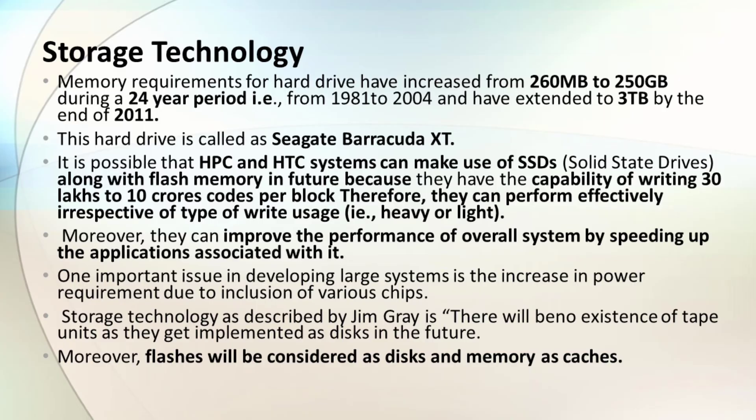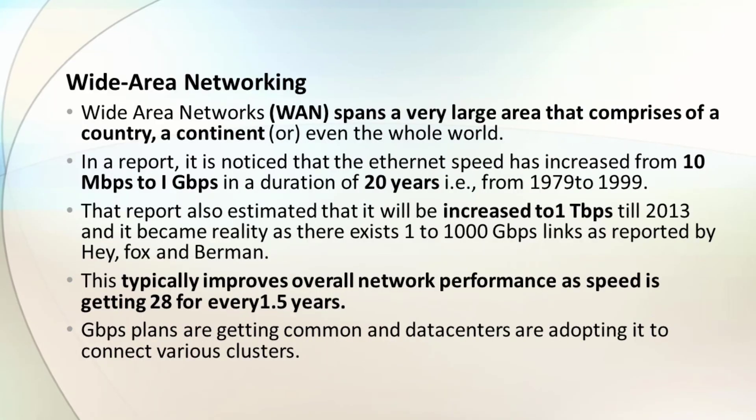WAN (Wide Area Network) spans a very large area, comprising a country or continent. A report notes that WAN bandwidth speed has increased from 10 Mbps to 1 Gbps over a 20-year span from 1979 to 1999. It was estimated to reach 1 Gbps by 2013, and this became reality with 1 to 1000 Gbps links reported by researchers.